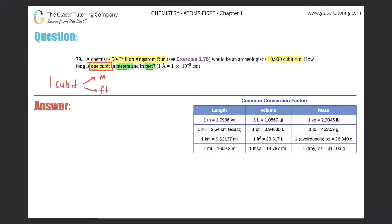How long is it in meters and we also want to find out how long it would be in feet. So here the key is to read between the lines. They say see exercise 1.78, a 50 trillion angstrom run, but you don't really need to know that information for this type of problem because they're giving you a conversion in words: 50 trillion angstrom would be equal to 10,900 cubit run.